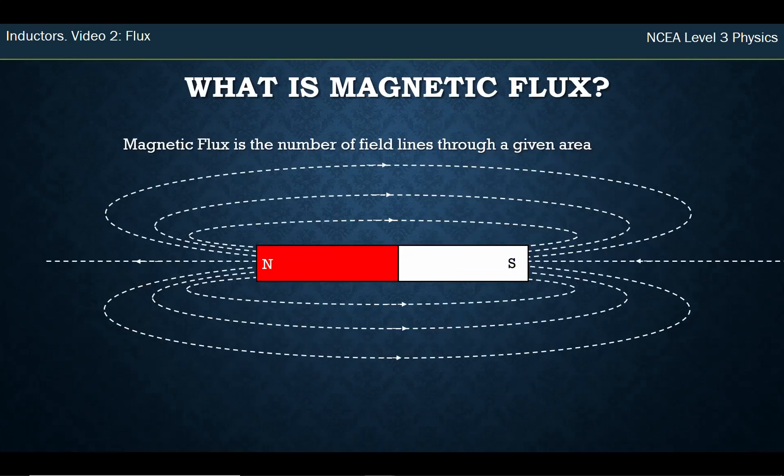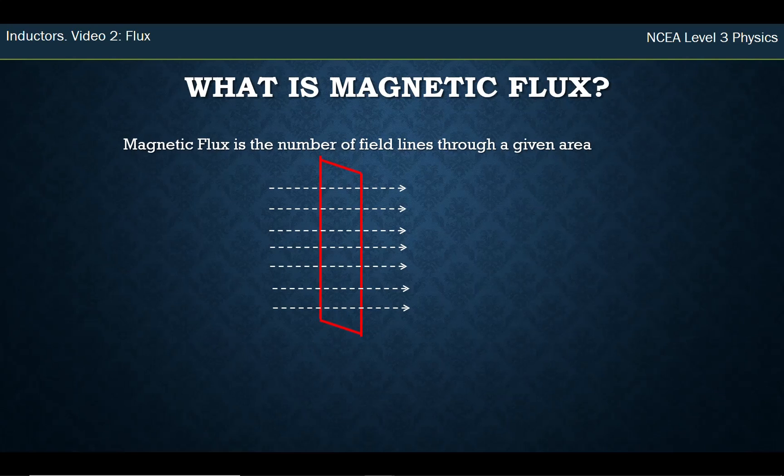So flux effectively is the number of field lines through a given area. And so what do you mean by area? An area is whatever area you choose. So I could choose this little here, put a nice little square. And if I wanted to look at that area, I'd just simply sort of count the field lines that are going through it. So let's zoom in on that little box I've made on the right there. And it looks like this.